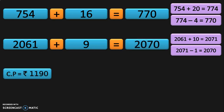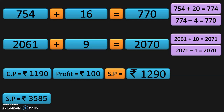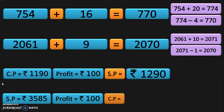Next, cost price is Rs. 1,190 and profit is Rs. 100. What is the selling price? This can be done mentally: 1,190 plus 100 is 1,290. Next sum: selling price is Rs. 3,585 and profit is Rs. 100. What is the cost price? That is 3,585 minus 100, which gives 3,485. All these sums can be done mentally only if the children are thorough with the concepts.